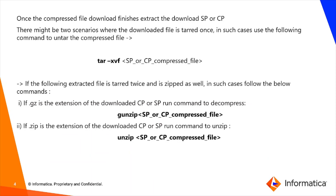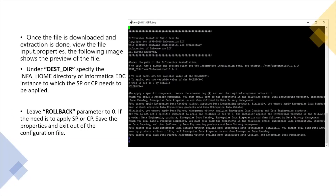After ensuring the domain is shut down and the download is complete, we decompress the SP or CP file. When downloaded, it is in compressed form. If compressed once (tarred once), use the command: tar -xvf [filename]. If the file is tarred twice and also zipped, first unzip it using the unzip command, then decompress further using the gunzip command. Choose the appropriate decompression method based on the file extension.